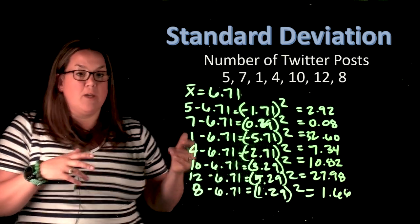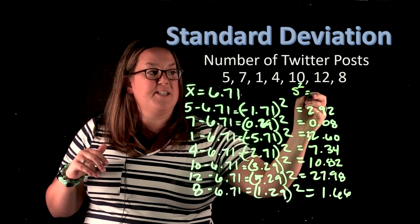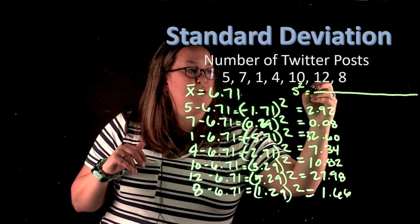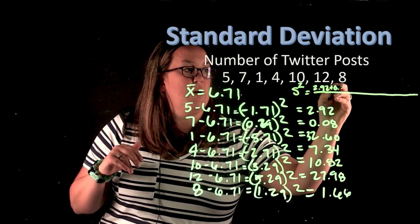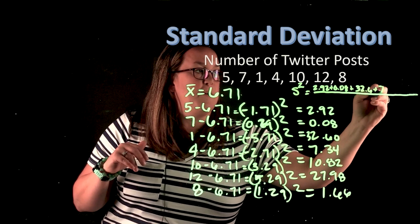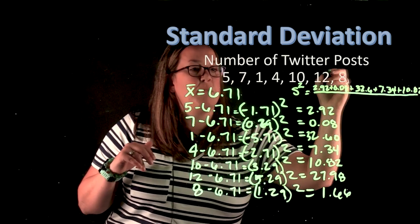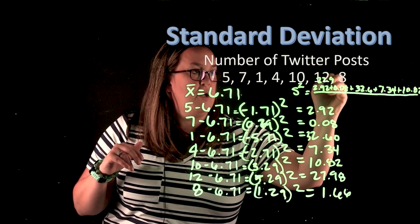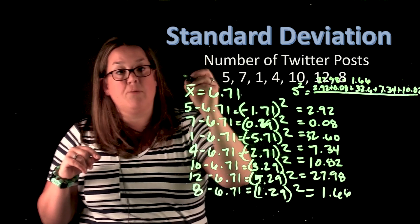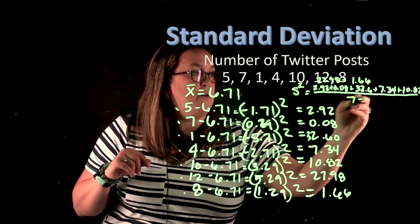Now we're close to being able to calculate the variance. So remember that variance is going to be S squared. And what it does is it sums all of the observations, all of those deviations. So we have 2.92 plus 0.08 plus 32.6 plus 7.34, 10.82. I'm going to get fancy and go above so you can all see it. And 1.66. And we divide that by N, which is the number of observations. And here if you remember our N is 7. So we have 1, 2, 3, 4, 5, 6, 7 observations. So we have 7 minus 1.